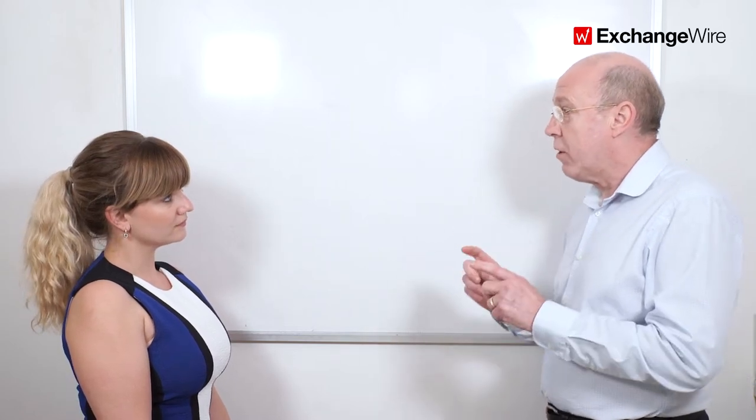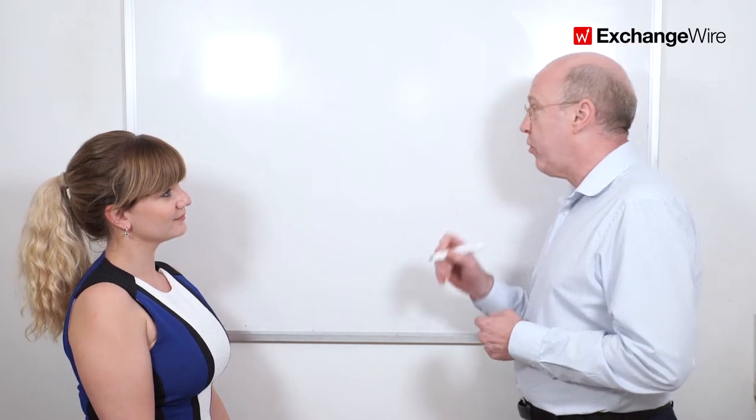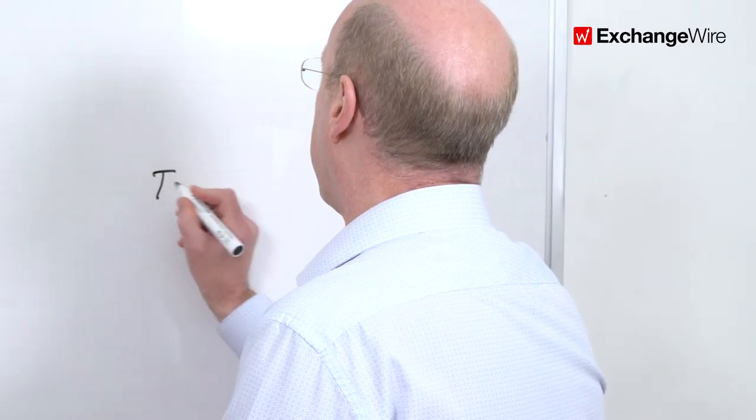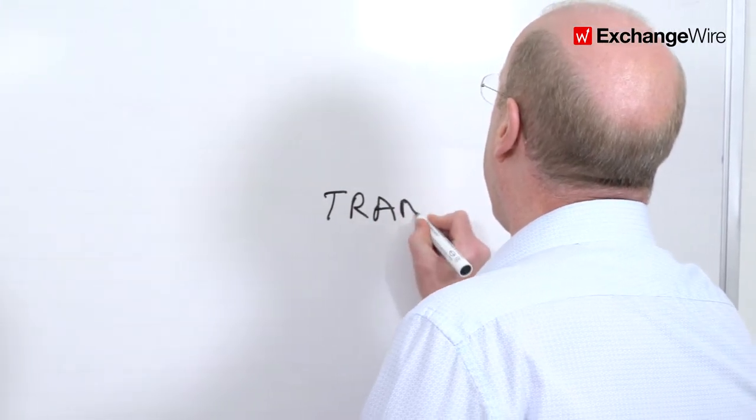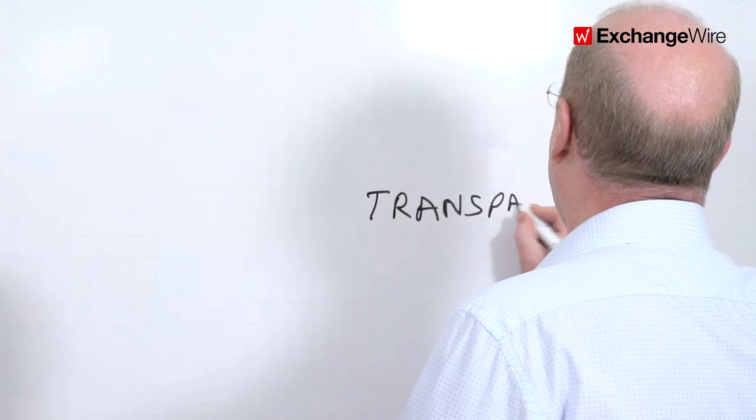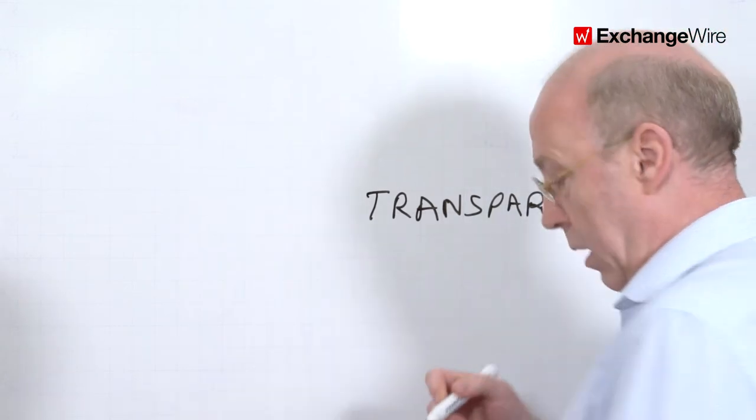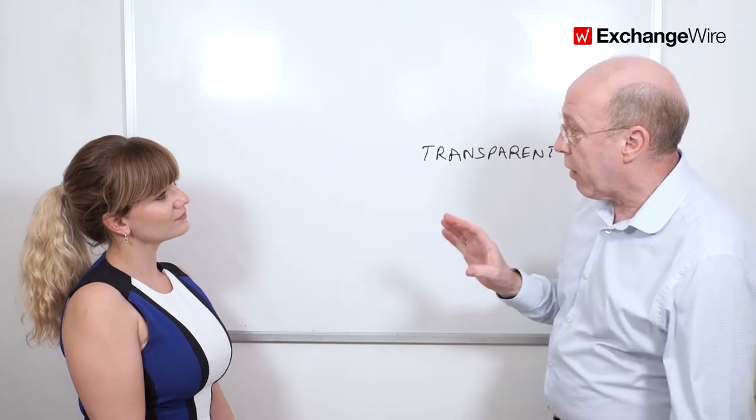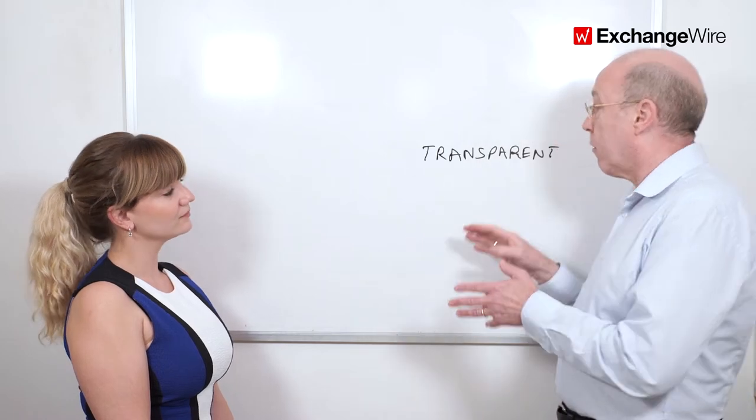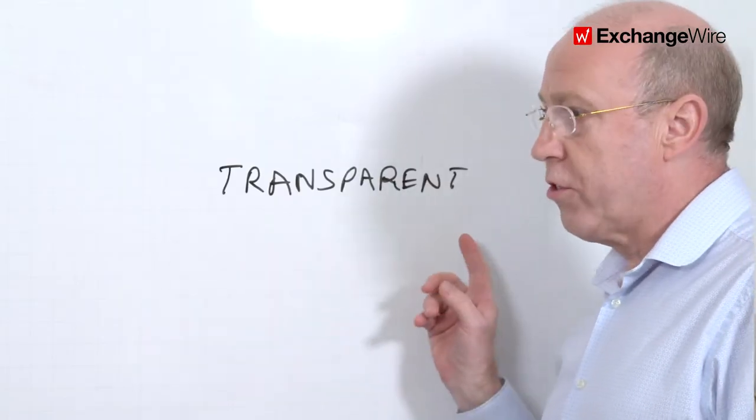They've added two words, which I think are going to be really important in this. The first is transparency. Transparent is what it says, fair, lawful and transparent. That's the first principle. It was just fair and lawful. So what's this transparent bit?